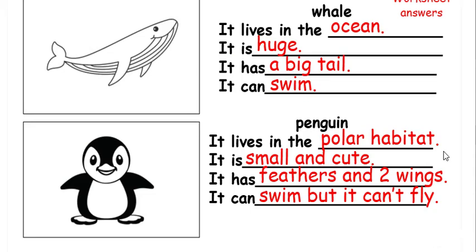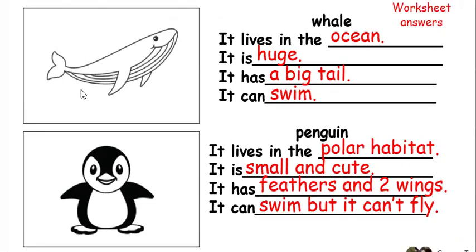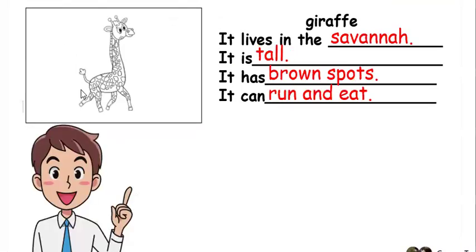It is small and cute. It has two wings. It can swim, but it cannot fly. Giraffe: it lives in the savannah, it is tall, it has brown spots, it can run and eat.